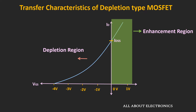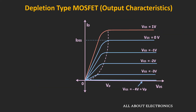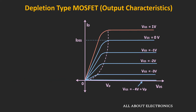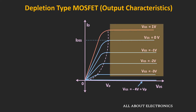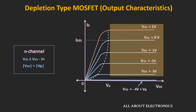If we see the drain curves, or the ID vs VDS curves, they are similar to the JFET, but now we also get curves for positive values of VGS. To operate the MOSFET in the active region, the VDS should be greater than or equal to VGS minus VP. In this region, the drain current can be given by Shockley's equation.